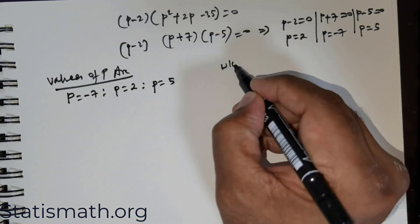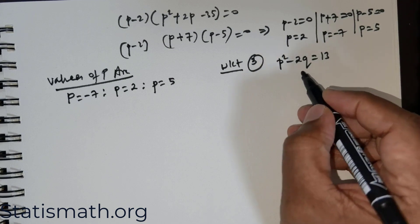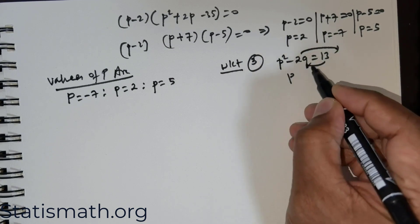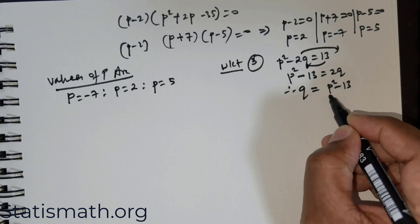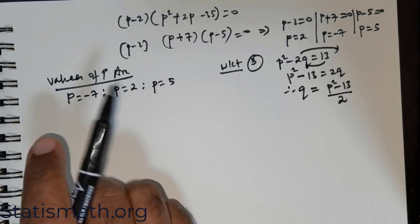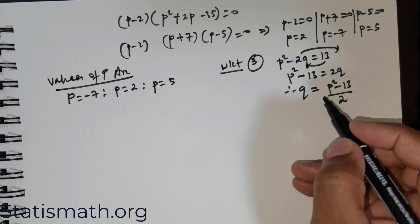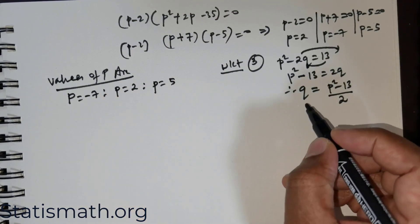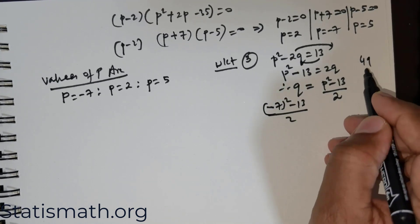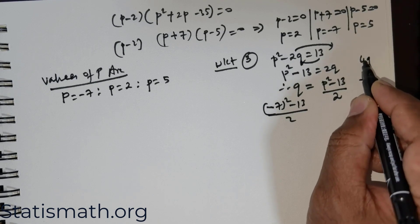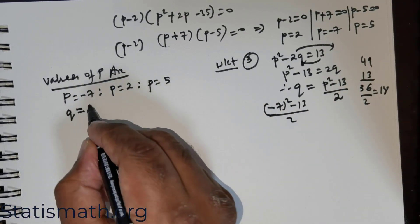Now we need the value of q. From equation (3), p² − 2q = 13, so q = (p² − 13) / 2. When p = −7: q = (49 − 13) / 2 = 36 / 2 = 18. So q = 18.